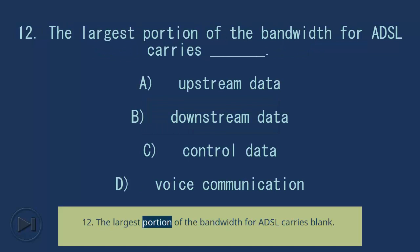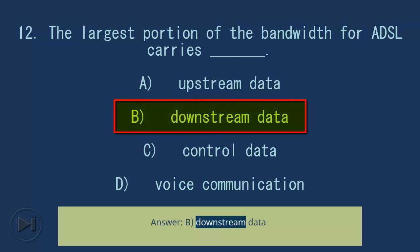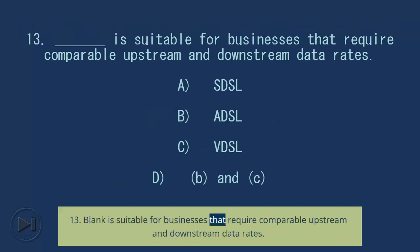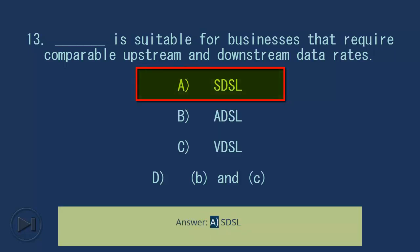Question 12: The largest portion of the bandwidth for ADSL carries blank. A. Upstream data. B. Downstream data. C. Control data. D. Voice communication. Answer: B. Downstream data. Question 13: Blank is suitable for businesses that require comparable upstream and downstream data rates. A. SDSL. B. ADSL. C. VDSL. D. B and C. Answer: A. SDSL.